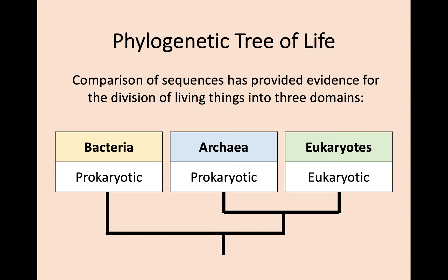As bioinformatics and phylogenetics are being used more and more, we've been able to use comparative genomics to classify all organisms into three domains of life: bacteria, which are prokaryotic organisms; archaea, which are also prokaryotic organisms; and finally the eukaryotes, which are eukaryotic. We don't need to go into more detail about these classifications at this stage, but this is something you need to know. Looking at this tree, you can see the initial point of divergence where bacteria broke away, and then further on there was a more recent divergence between the archaea and the eukaryotes.